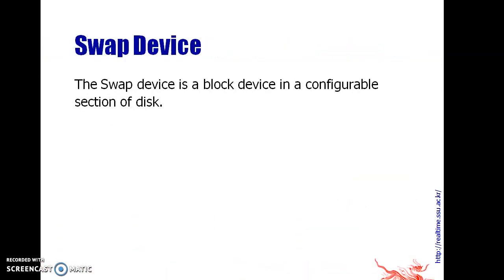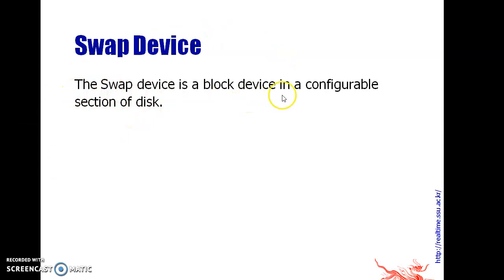Now let us see what is a Swap Device. Swap Device is a Block Device in a configurable section of a disk. Since it is part of a Hard Disk, and a Hard Disk is a Block Device, the Swap Device is therefore a Block Device.